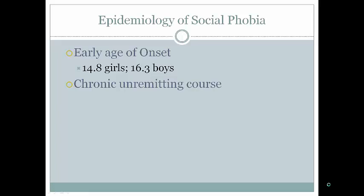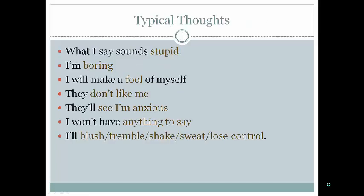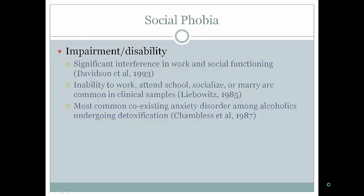These treatments are designed for people with symptoms as severe as meeting diagnostic criteria. Typical thoughts heard from people with social anxiety disorder include: 'What I said sounds stupid,' 'I'm boring,' 'I'm going to make a fool of myself,' 'They don't like me,' 'They'll see I'm anxious,' 'I won't have anything to say,' and 'I'll blush, tremble, shake, sweat, or lose control.' For people with social anxiety disorder, these become debilitating.